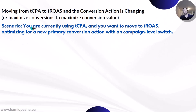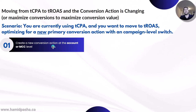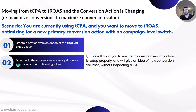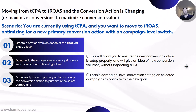The next scenario is similar. You are currently using target CPA and you want to move to target ROAS, optimizing for a new primary conversion action, but this time at campaign level — not account level. You are making a campaign level switch, going campaign by campaign rather than changing all campaigns at once. First, create the new conversion action at the account or MCC level. For now, do not add the conversion action as primary. This will allow you to make sure the new conversion action is set up properly and give you an idea of new conversion volumes without impacting the current bid strategy of tCPA.